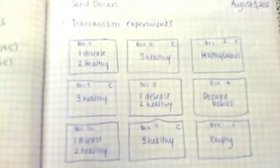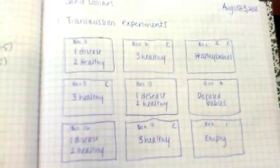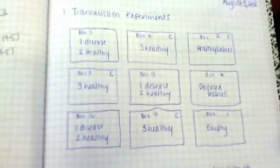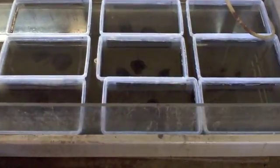We have three controls, which are three healthy sand dollars. Then we have three experimental ones, which consist of one diseased sand dollar and two healthy sand dollars. They're touching right now to see if the disease will go from one to the next, and we'll be checking on them over the next few days. In two of our spare boxes over here, we're looking at the smaller ones — the babies — with a couple healthy and a number of diseased. We'll keep the blog updated with results.